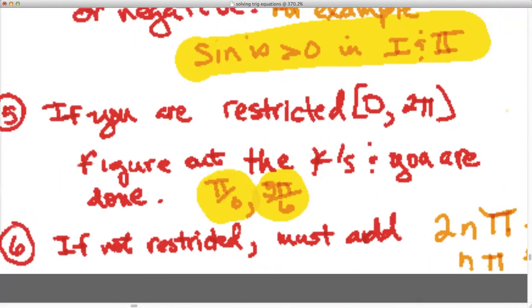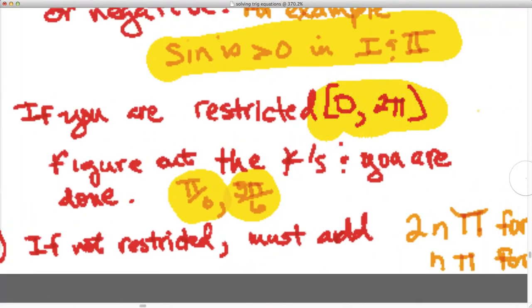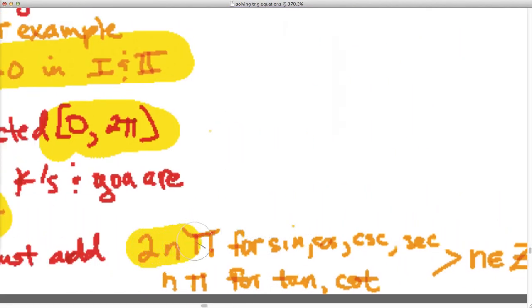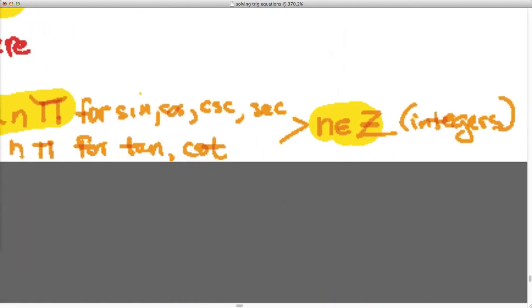Now, if you're not restricted to 0 and 2π like we were in the other one, you'd have to add in this case a 2nπ, where n is an element of the integers. If you remember, the integers are the positive and negative whole numbers.